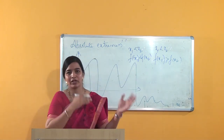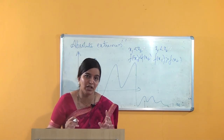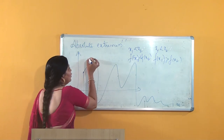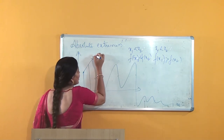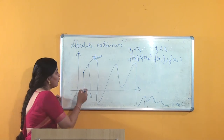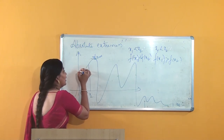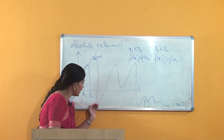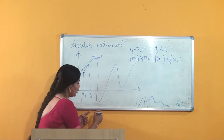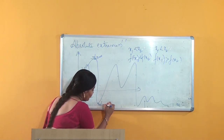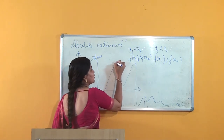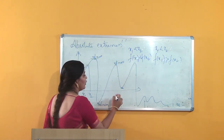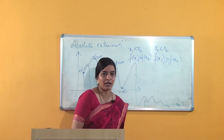Coming to our topic — absolute maximum and absolute minimum value. See here, the value is attaining the maximum value at this point, so I can say this is a relative maximum. Here the value is minimum, so I can say this is a relative minimum value. Then once again the graph attains a minimum value — this is also relative minimum. Next it attains the maximum value — this is also relative maximum. And so on.